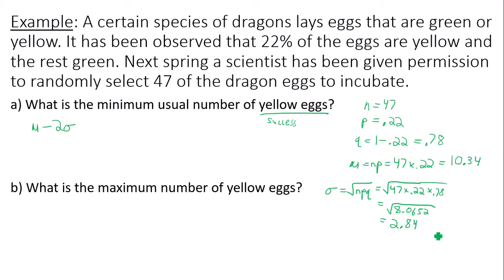Now the more decimal places you keep, the more accurate your answer is going to be as I find the minimum and maximum number of usual values. So if you want to, you can go out more decimal places than just 2.